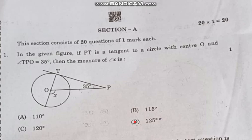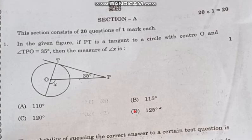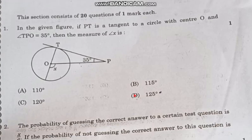CBSE Class 10 question paper answer key. Question number 1: In the given figure, if PT is a tangent to a circle with center O and angle TPO equals 35 degrees, then the measurement of angle X is correct answer option D, 125 degrees.